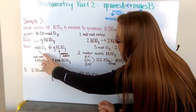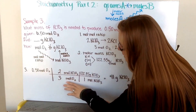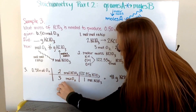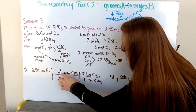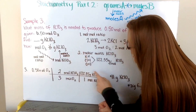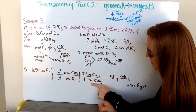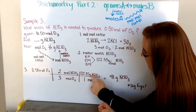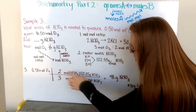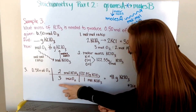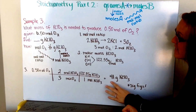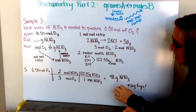Step 1: I use my mole-to-mole ratio to go from moles of oxygen to moles of potassium chlorate. Moles of oxygen goes on the bottom, moles of potassium chlorate on the top — a 3 to 2 ratio, so 3 moles of oxygen for every 2 moles of potassium chlorate. Step 2: I use my molar mass of 122.55 grams for every 1 mole. Calculating: 0.5 × 2 × 122.55 ÷ 3 ÷ 1 gives me 41 grams of potassium chlorate, rounded to two significant figures.